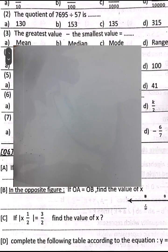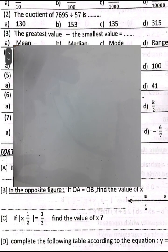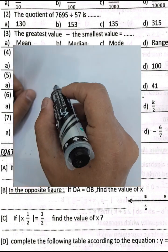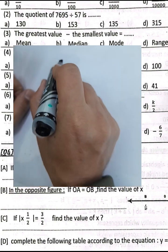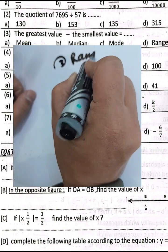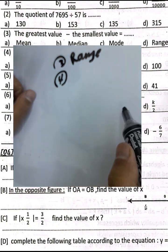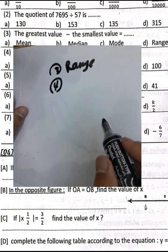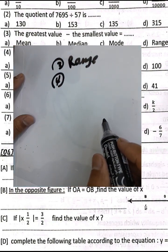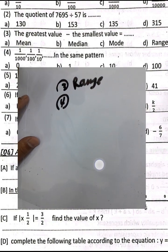Question number 3: The range is the greatest value subtracted by the smallest value — the difference between the maximum and minimum.